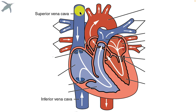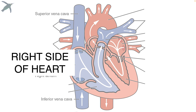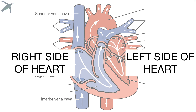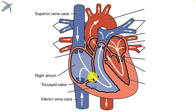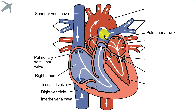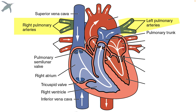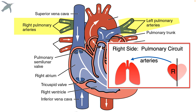Deoxygenated blood comes into the heart from the body through the superior vena cava and the inferior vena cava, and the blood will enter the right atrium. This is the right side of the heart, and this is the left side — please don't lose those points. The blood will then move through the tricuspid valve and into the right ventricle. The blood leaves the heart through the pulmonary semilunar valve and enters the pulmonary trunk, which splits into the right and left pulmonary arteries. Notice these vessels are blue because the blood is deoxygenated — but they're arteries!